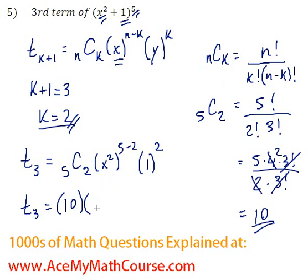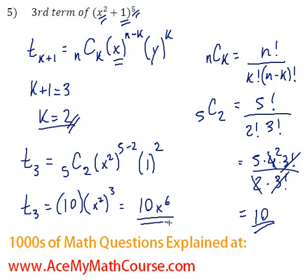Here we have x squared to the power of 3. 1 squared is just 1, so I won't even write it. So x squared to the 3, or cubed, would be just x to the 6, because we multiply the exponents. So the final answer is 10x to the power of 6.